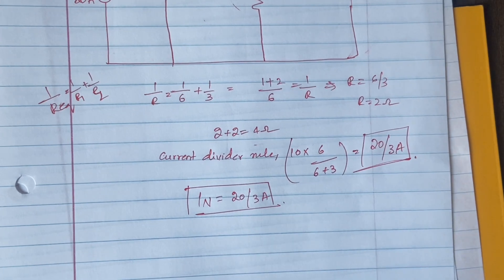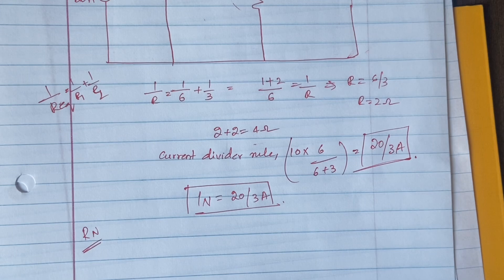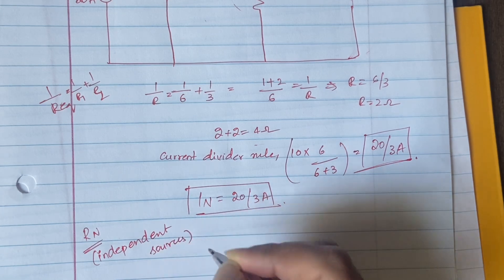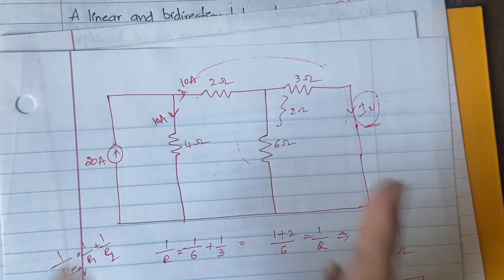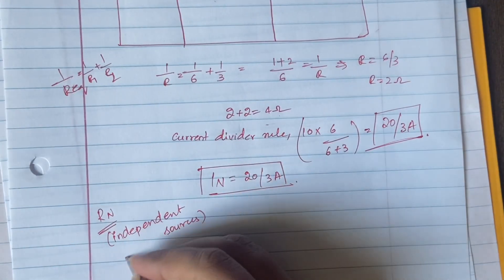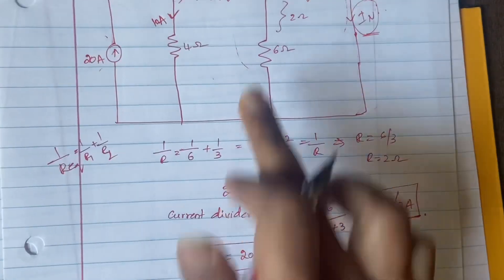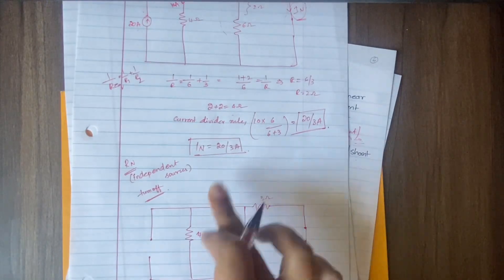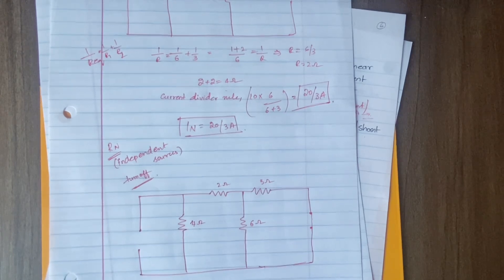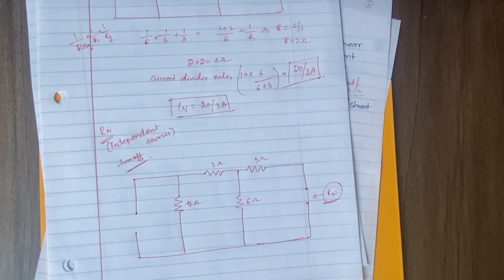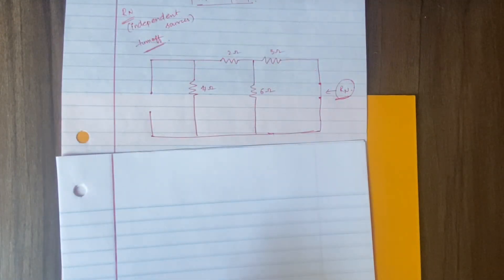Now the second task is to find RN. To find RN, we turn off the independent sources. We keep the diagram as it is but remove the 20-ampere current source. From the new diagram with the source removed, RN is seen looking into the terminals. We just have to apply series and parallel resistance rules.